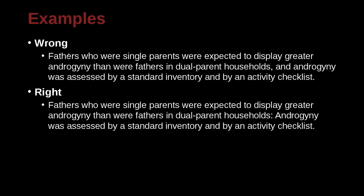Here we have two long sentences joined at a conjunction and a comma, but a better way would be to use a colon with a capital letter, putting these two sentences together. 'Fathers who were single parents were expected to display greater androgyny than were fathers in dual parent households. Androgyny was assessed by a standard inventory and by an activity checklist.' These are two separate sentences, but we can bring them together with a colon, a space, and a capital, because the two ideas are highly related.